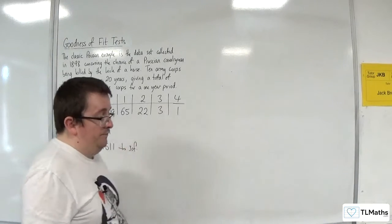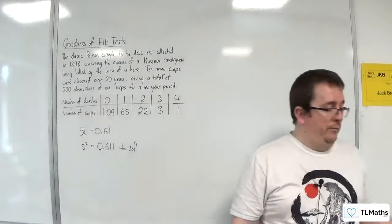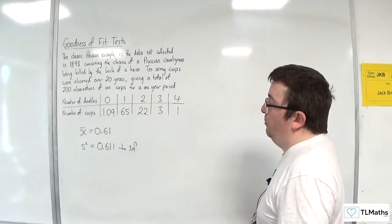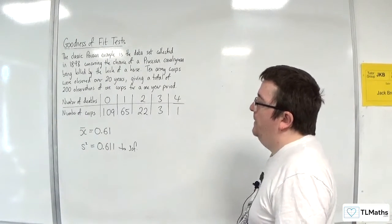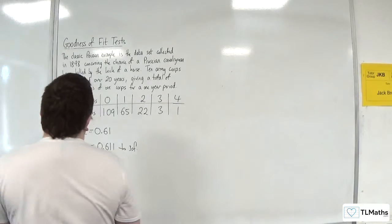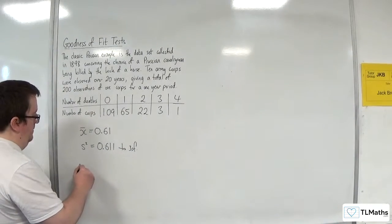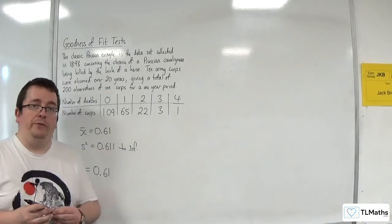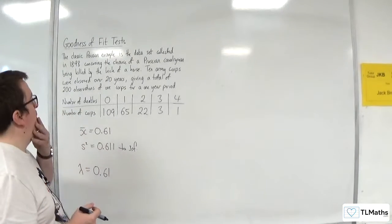So actually, they're very close, which supports the Poisson model. So let's use lambda as 0.61, and we will see how close it actually is.